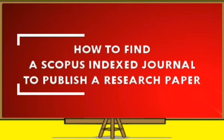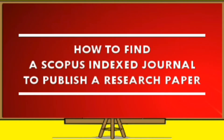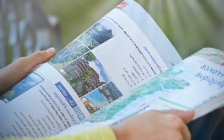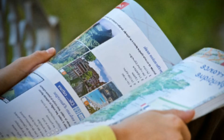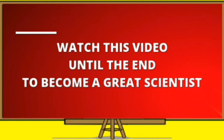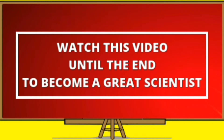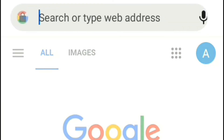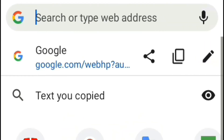How to find a Scopus-indexed journal to publish a research paper. Hello ambitious researcher, welcome to Research Academy channel. If you want to publish your research article and want to find a peer-reviewed journal indexed in Scopus, watch this video until the end. Let's go — first open a web browser and type this link.